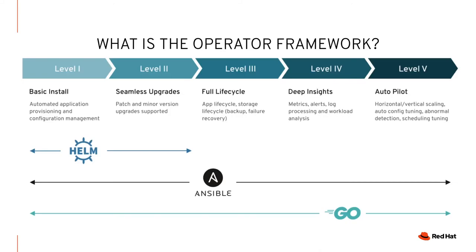Let's get into the capabilities of operators themselves. There are different levels, one through five. Level one is a basic install — just being able to deploy the application. Level two operators do seamless upgrades, patching, minor and major version upgrades. Level three is operator lifecycle management — failure recovery and backups. Level four is deep insights, collecting metrics, analyzing workloads. And finally, level five is autonomous operations — autopilot — where operators can horizontally and vertically scale applications, auto-tune configuration, perform anomaly detection, and more.